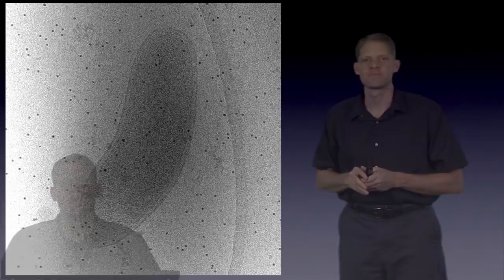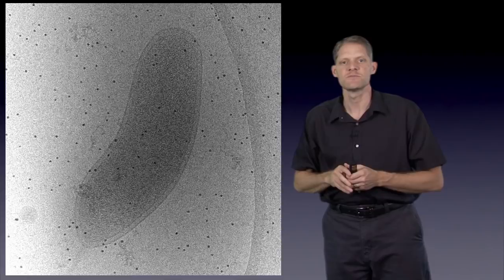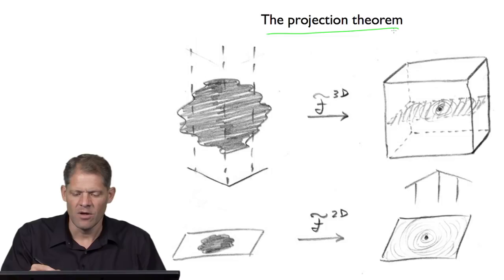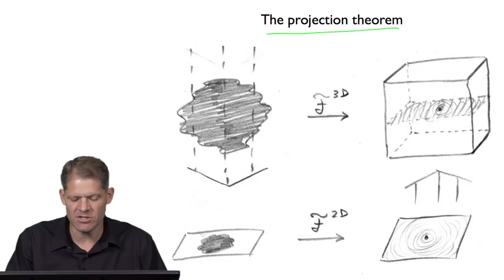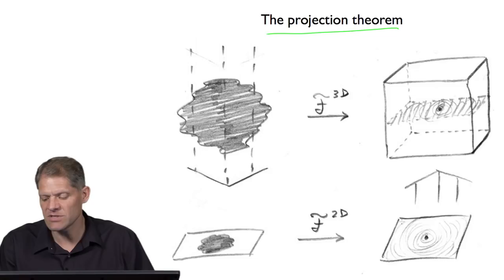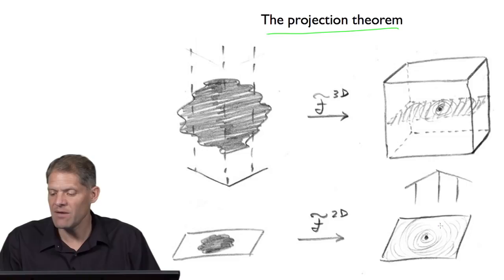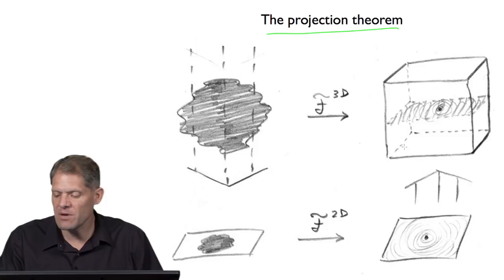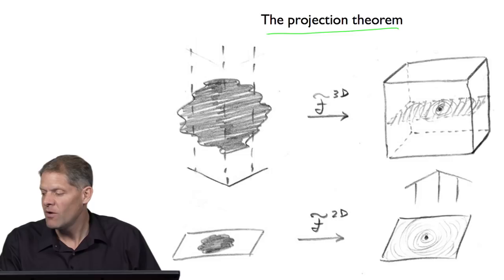Remembering the projection theorem: if you have a 3D object and record a projection image — a 2D image — and calculate its Fourier transform, the amplitudes and phases are the same as on a central section through the three-dimensional Fourier transform of the original object. So what we do next is calculate the Fourier transform of each individual image, and then merge those images in reciprocal space.